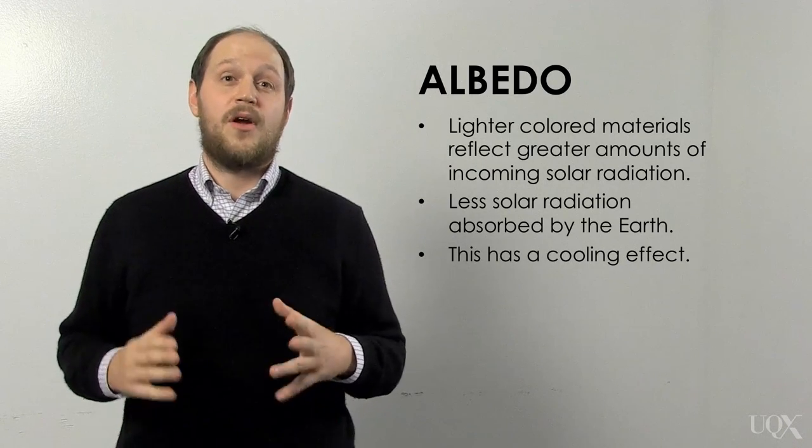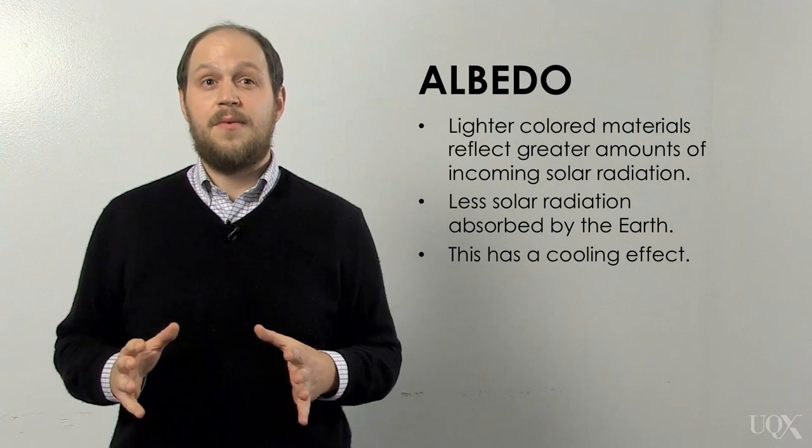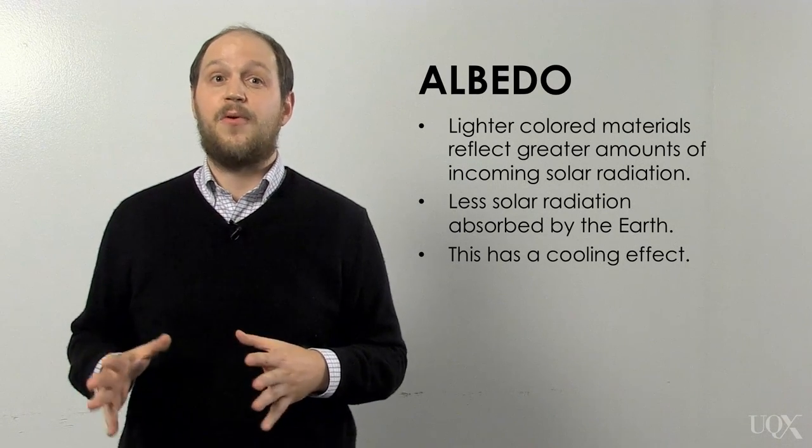Albedo is a term that means how much a surface either reflects or absorbs light. In much the same way that wearing a white t-shirt will keep you cool in the summertime by reflecting sunlight, clouds reflect some of the sun's light back out to space before it can be absorbed.